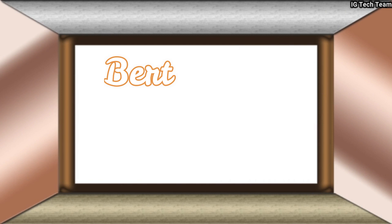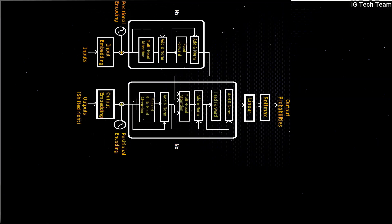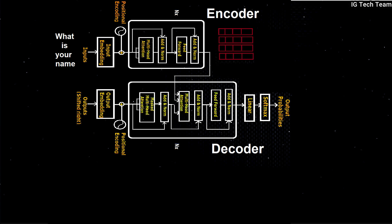Let's discuss about BERT. In my previous video, I explained about Transformer. Let me revise this once again. Suppose we are doing language translation from English to any other language like Hindi. The encoder takes all words simultaneously and produces meaningful embeddings of all words simultaneously.